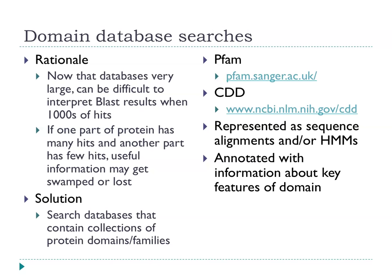A problem with BLAST searches is that the databases are now getting huge. Fifteen years ago a search might return half a dozen hits you could evaluate easily. Now, because so many genomes have been sequenced, you may get thousands of hits, making it difficult to work out what it all means. An alternative approach is to take the information encoded in all those thousands of hits and make a domain database. You take a thousand similar proteins, abstract out the key features of the conserved region, annotate that, and search against a model of that region rather than against all thousand sequences. A common approach now uses a site called PFAM — protein families at the Sanger Institute — for this purpose.